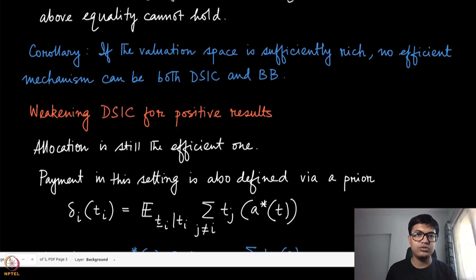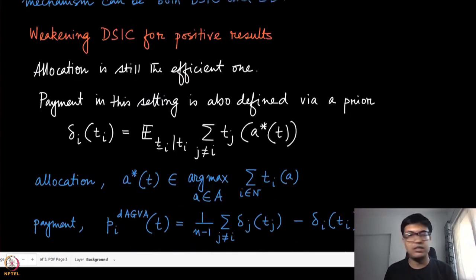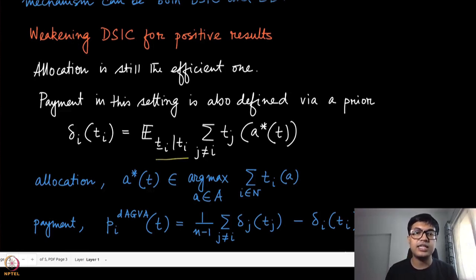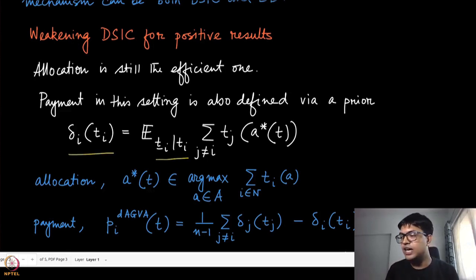One of the early attempts to bypass this impossibility result is to weaken DSIC to BIC — Bayes Nash Incentive Compatibility. The allocation still remains the efficient one. The payment in this BIC setting uses a prior distribution over types, taking the expectation with respect to t_{-i} given that the agent knows its own t_i. The mechanism designer charges δ_i(t_i): the expected sum of all other agents' valuations at the optimal allocation.